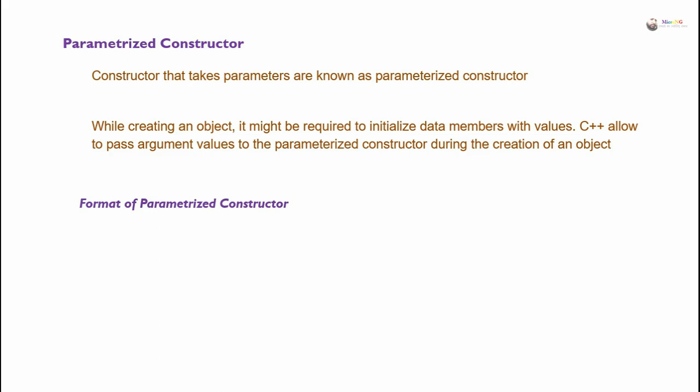Format of parameterized constructor. The constructor name is the same as the class name, without any return data type, and it takes a number of parameters as the argument list. If there are multiple arguments, they need to be separated by commas, and each argument should be mentioned with its data type followed by the argument or parameter name. Inside the parameterized constructor, we can include data member initialization — the data member can be initialized by the value of the argument or parameter.